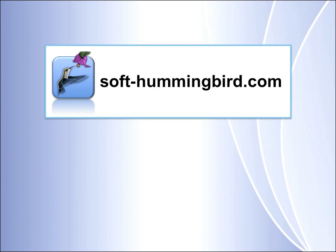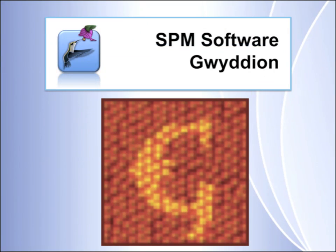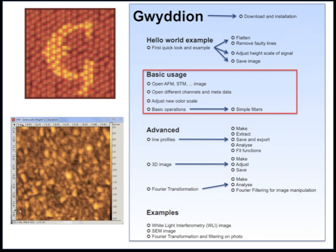Hello and welcome to the Soft Hummingbird Tutorials. This is a series of tutorials in which I will show you the program GVIDION. In this video I'll show you how to open different channels in AFM or SEM images, how to assign a different color scheme, and how to apply some basic operations such as smoothening of the data.